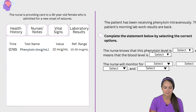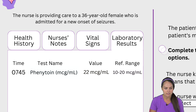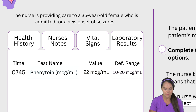Over here on the left part of your screen you're going to see that the nurse is providing care to a 36-year-old female who is admitted for a new onset of seizures, and you have what's part of the electronic health record. You have a health history tab, nurses notes, vital signs, and laboratory results. Here our laboratory results tab is open and we can see that the patient had some lab work.